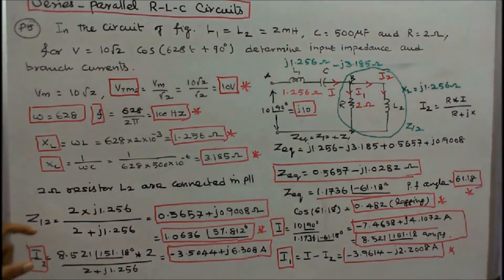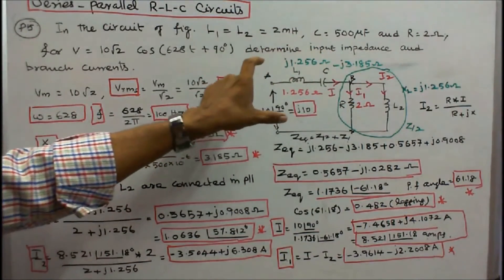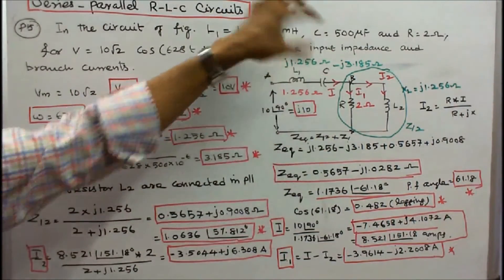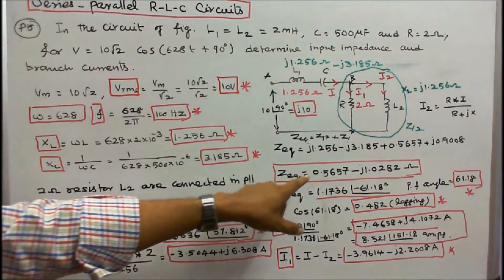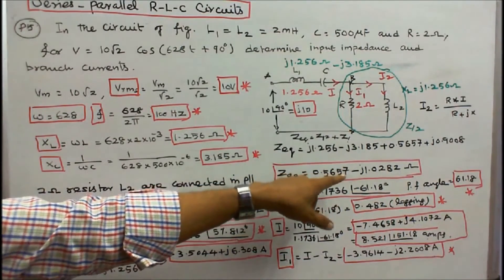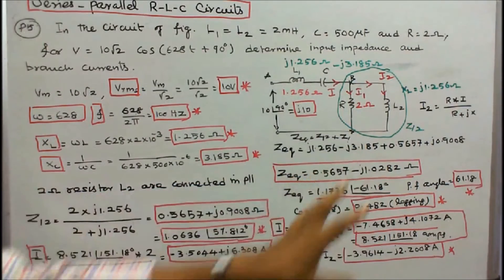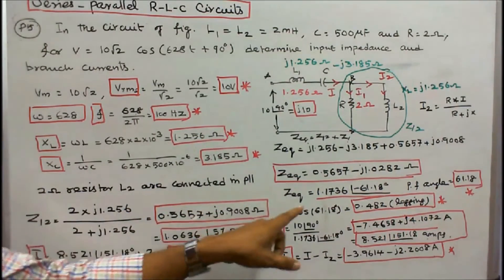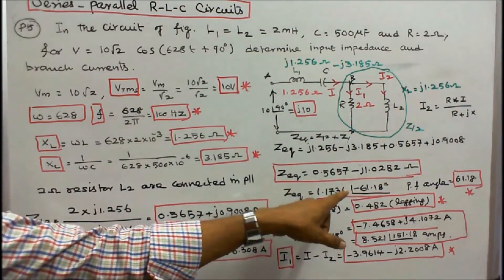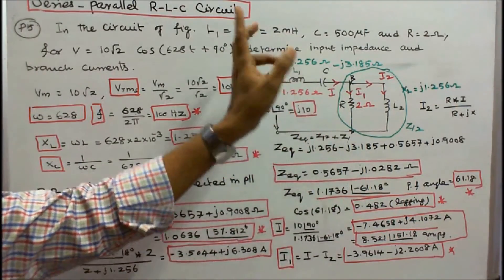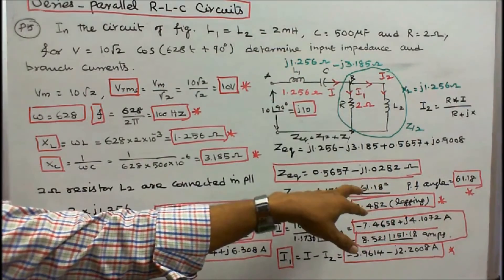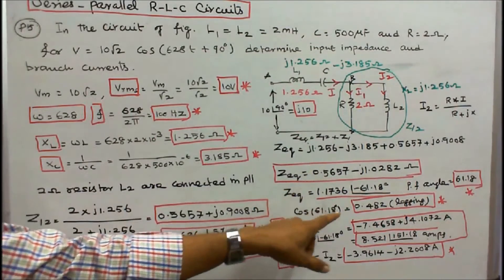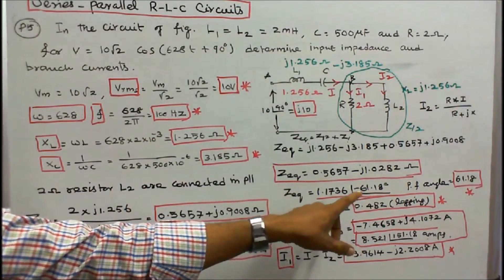Once I know this equivalent impedance, I can find the total impedance. Total impedance = Z12 plus the remaining series impedance = 0.5657 − j1.022 ohms in rectangular form, or 1.1736∠−61.18° in polar form. The power factor angle is 61.18°, so power factor = cos(61.18°) = 0.482, lagging.